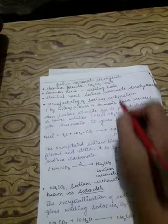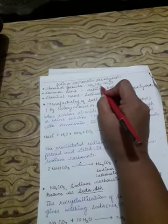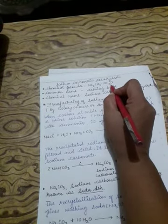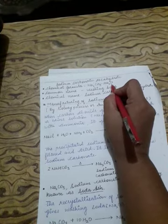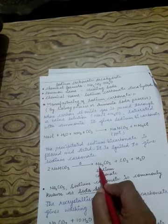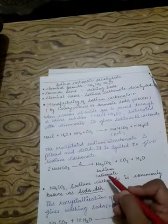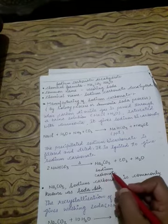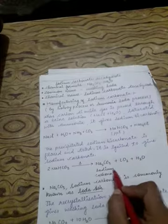This Na2CO3 is known as dehydrated sodium carbonate. Na2CO3 into 10H2O is sodium carbonate decahydrate with 10 H2O molecules. Na2CO3 is soda ash, or sodium hydrogen carbonate.